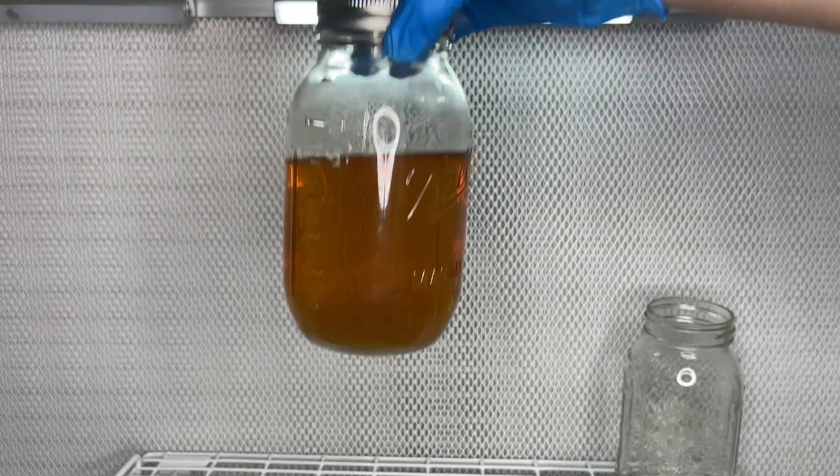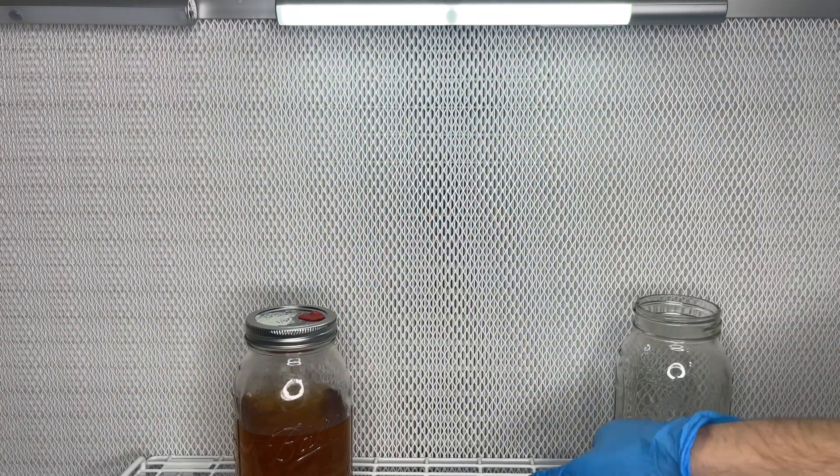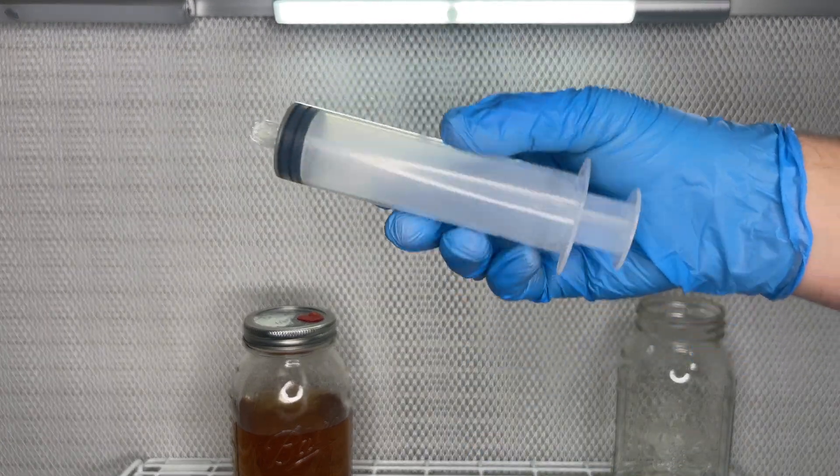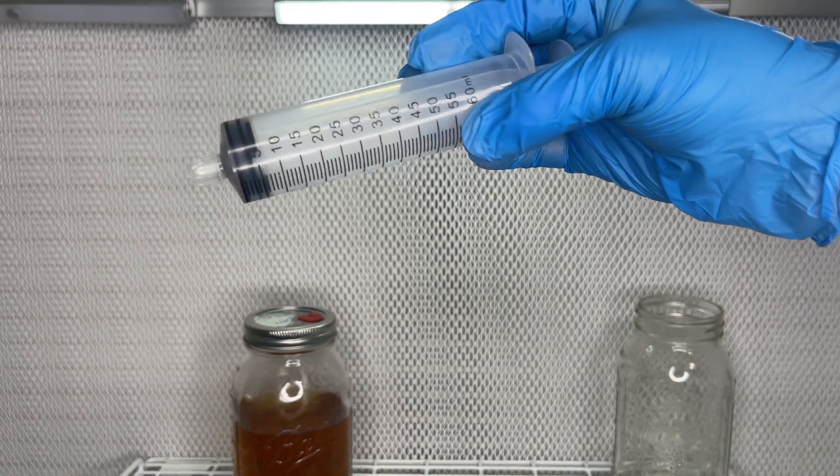Sometimes with certain mushroom species like lion's mane, the mycelium will only grow halfway through the jar, leaving a lot of extra liquid that will make it difficult to make thick liquid culture syringes.